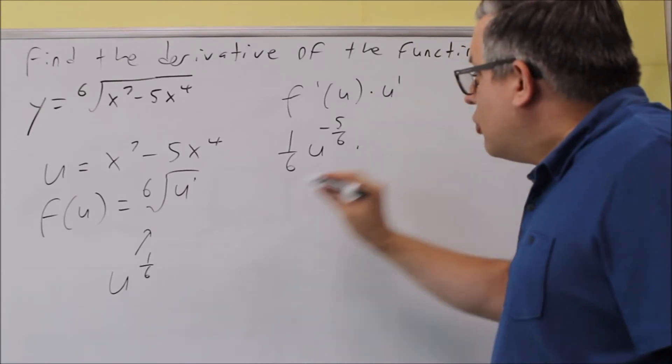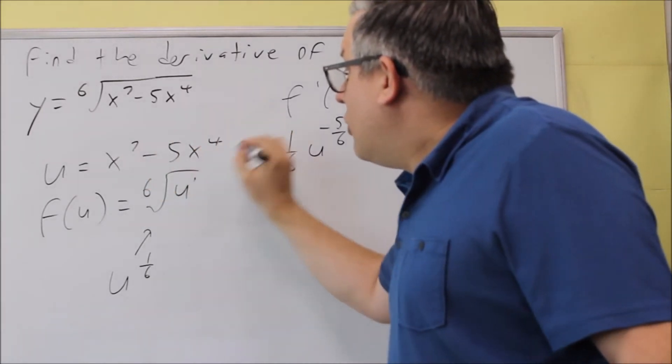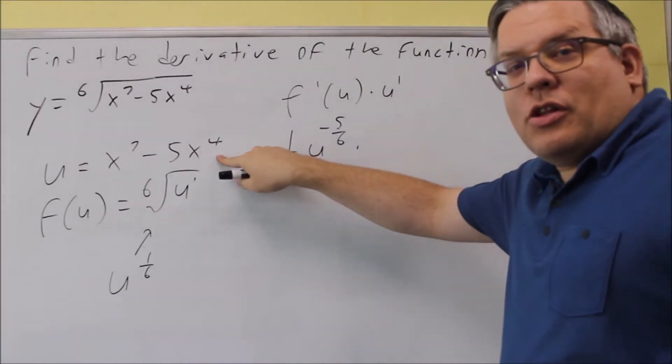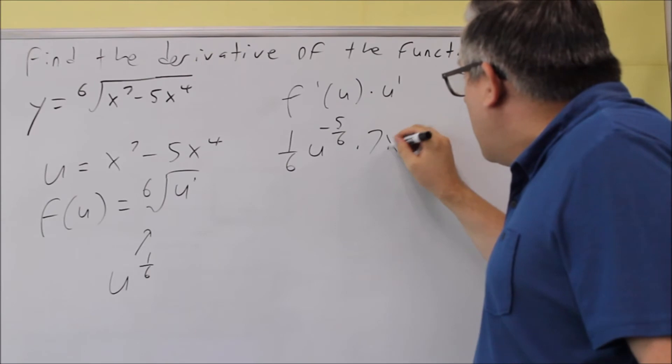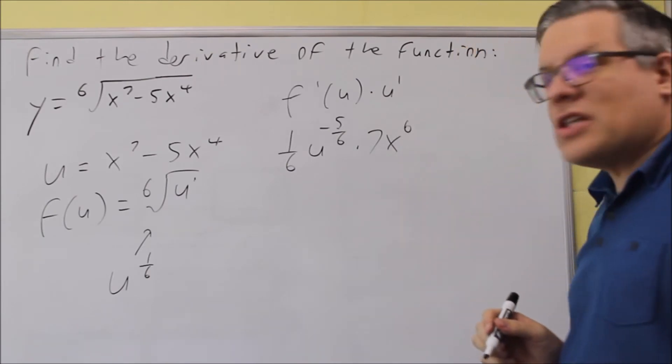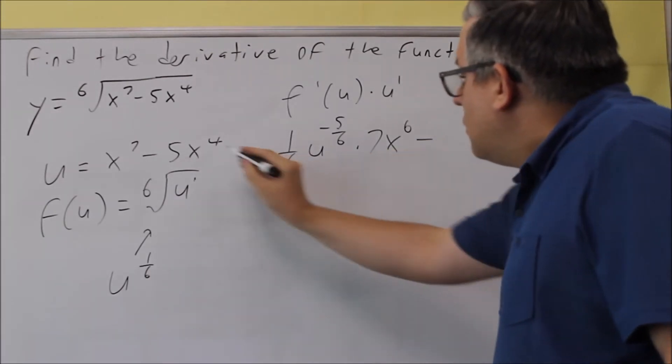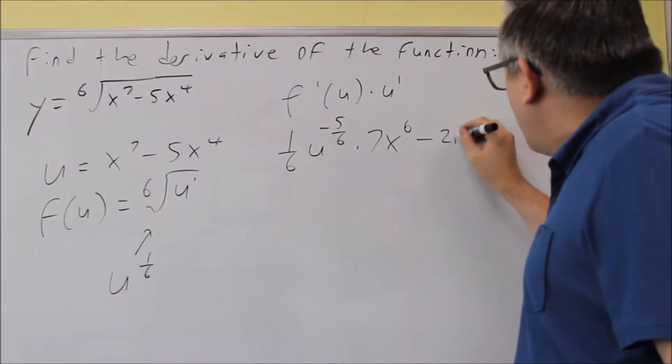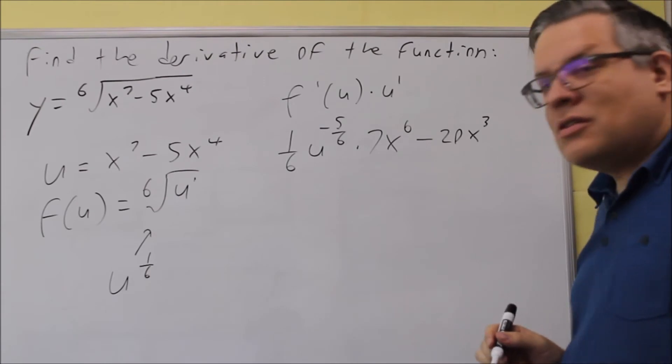And so now I'm going to multiply this by the derivative of u. So we're going to apply the power rule. Seven comes down, x subtract one from the exponent, giving us 7x to the sixth. Then we have minus four here, which will come down and multiply by the five, so we have 20x cubed.